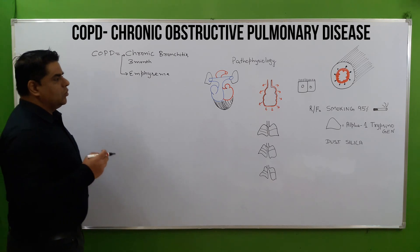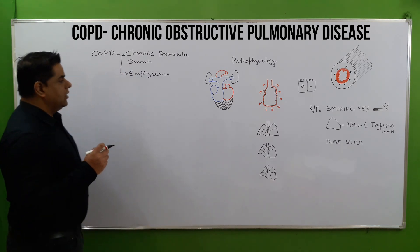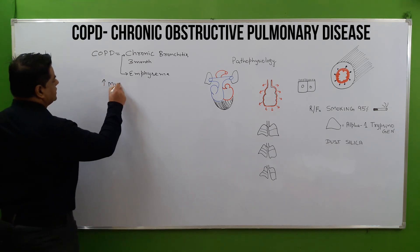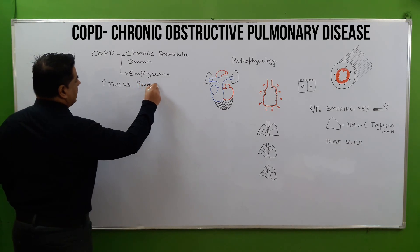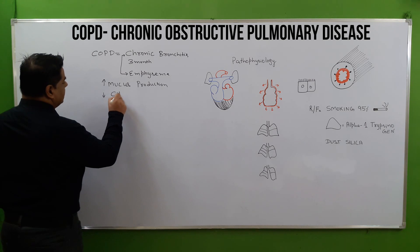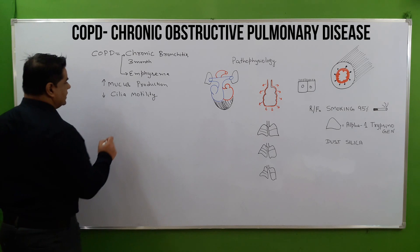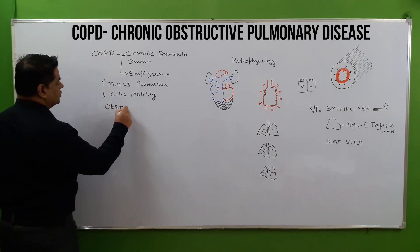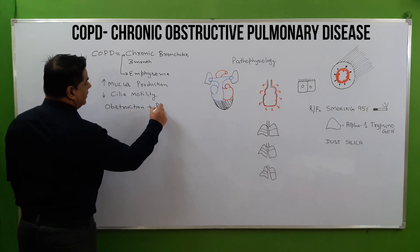What does it mean to have chronic bronchitis? It is first of all marked by excessive mucus production. There is also decreased cilia motility, and there is obstruction due to mucus production plus phlegm.